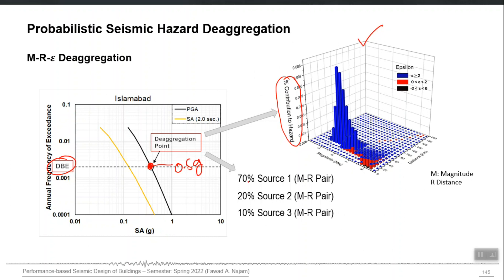In that 0.5 G, how much is being contributed is shown on the y-axis. On the floor you have the magnitude range — magnitude 4, 5, 6, 7, 8, 9 — and on the other side you have source-to-site distance: 20, 30, 40 kilometers. Each column on that floor represents a magnitude and source-to-site distance pair contributing to my number of 0.5 G. A taller column gives me the M-R pair which is contributing the most.